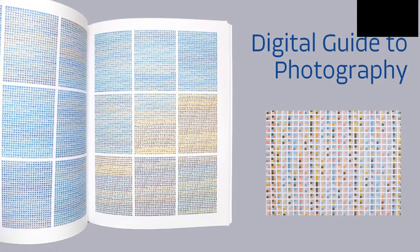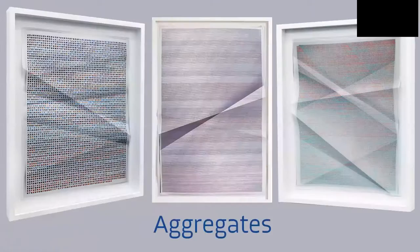He describes this project as an exploration into the materiality of photography as it moves towards the digital age. He describes digital photography as a language where these tiny little grids and pixels of colors can form sentences, paragraphs, and then finally as you zoom out and see the complete image, a complete story.